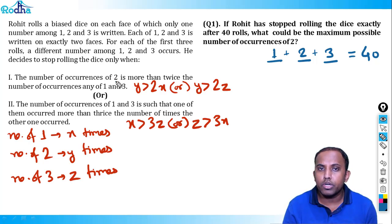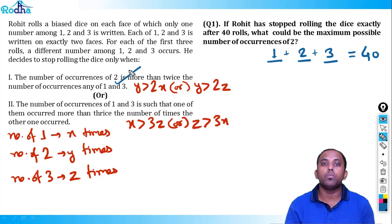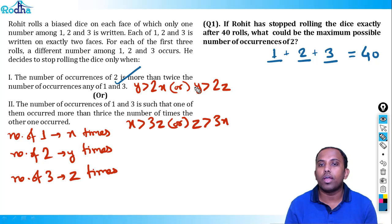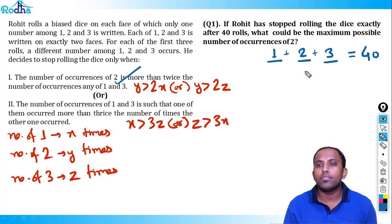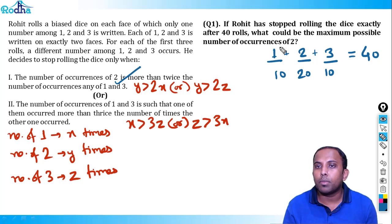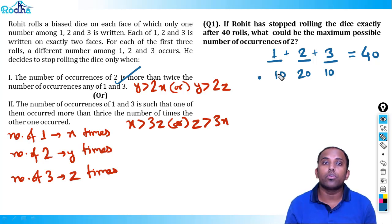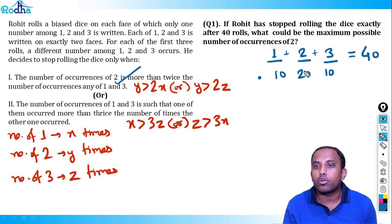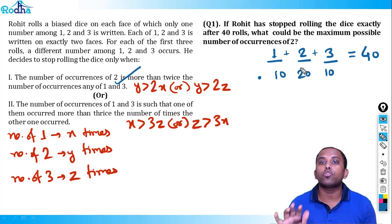At x = 10, y = 20, z = 10, the dice would not stop because y is not greater than 2x — it's exactly equal, not strictly greater. So y = 20 is not achievable. Can y be 20 with different values? If z = 9, then the dice stops at y = 19 (since 19 > 2×9 = 18). But that would stop before reaching y = 20. If z = 11, then to stop the dice, y needs to be at least 23, but then z = 6 would already have stopped rolling at y = 13.